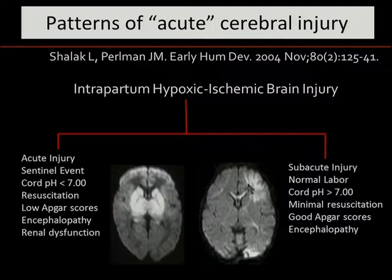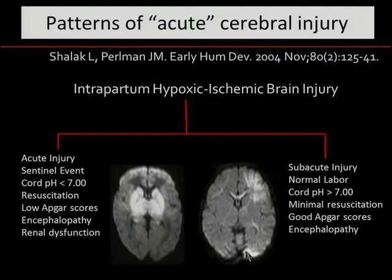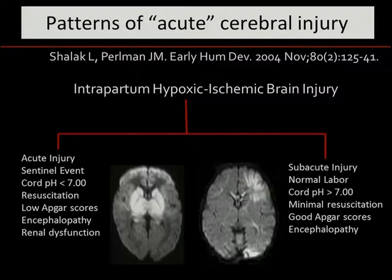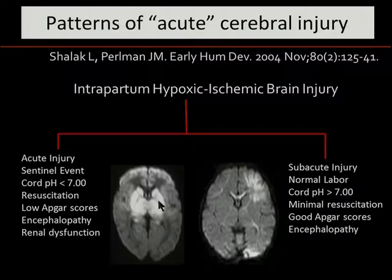Or you see this pattern of watershed in the vascular territories between the anterior and the middle cerebral arteries, or the middle and the posterior, involving predominantly the cortical gray matter with some underlying white matter injury, often in a wedge-shaped vascular watershed. The deep nuclear gray matter is extraordinarily vulnerable in infants in the setting of acute asphyxia because of its high metabolic demand. So if you like, this is a metabolic watershed and this is a vascular watershed.